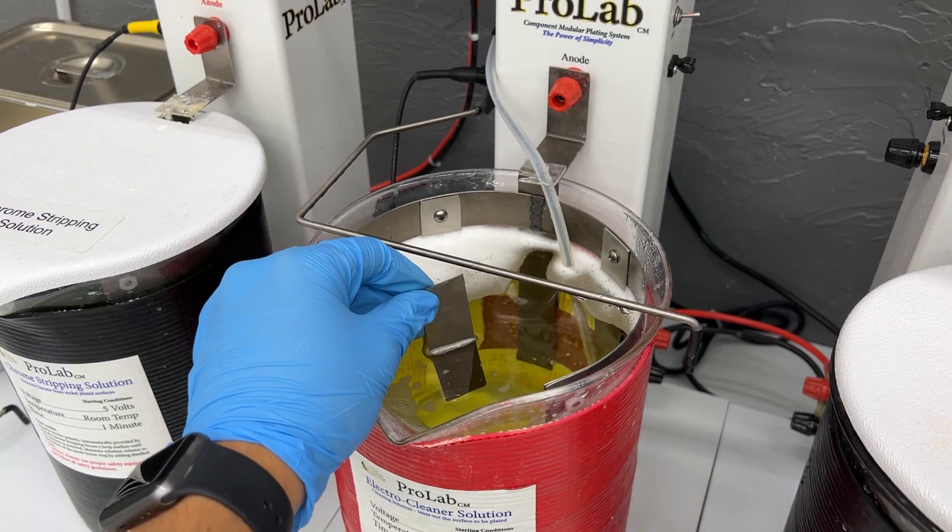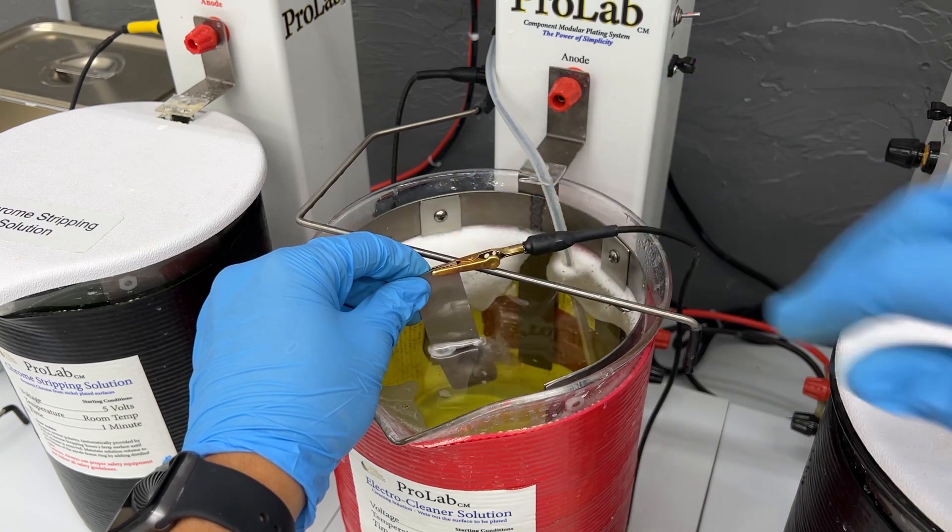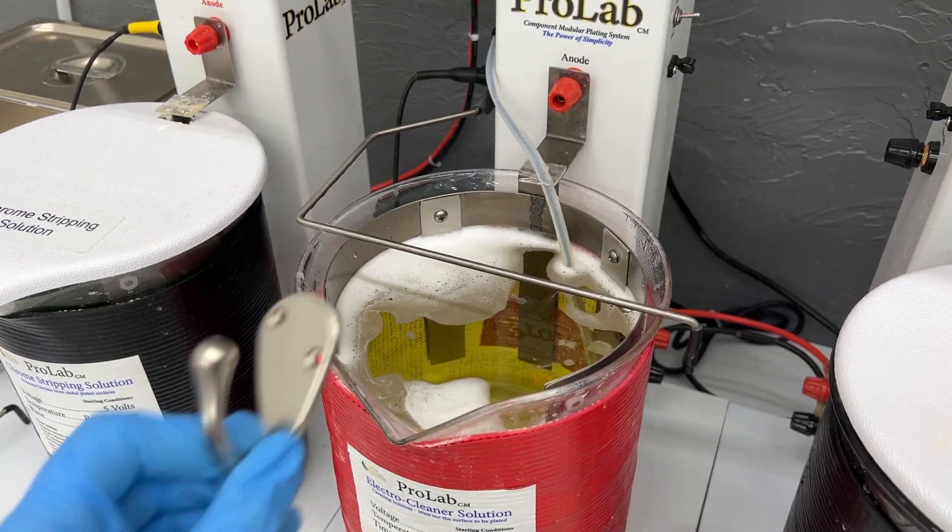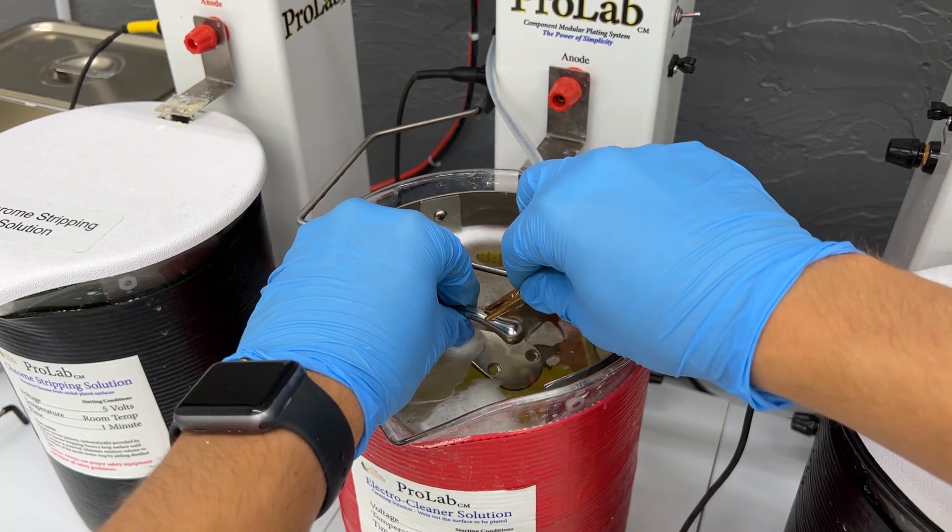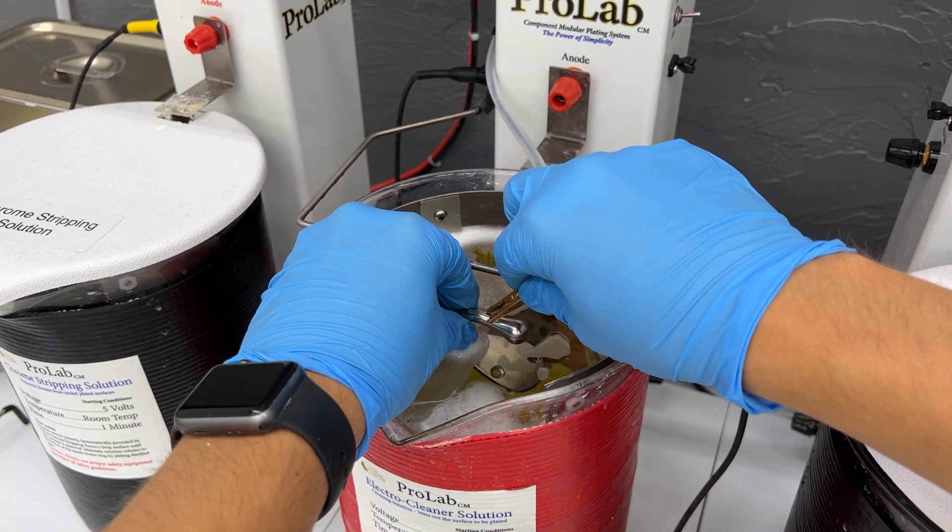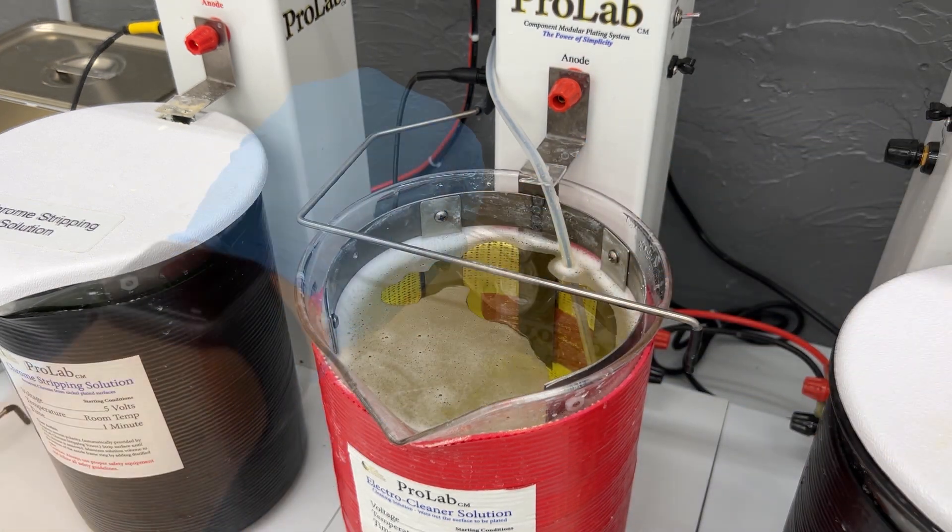If your item is not bubbling in the electro clean, that either means that there is not a good enough electrical connection, or it could mean that the item has a coating on it of some sort. It could be paint, clear coat, an oil coating, or just something that blocks the solution from electro cleaning it.